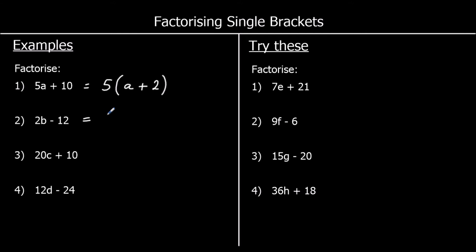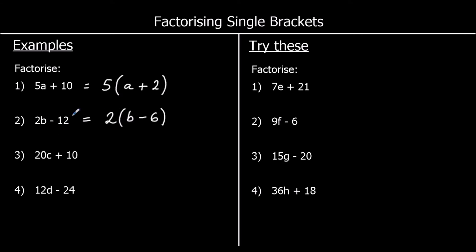For the second one, we've got 2b minus 12. What's the biggest factor of 2b and 12? That's 2 — both 2 and 12 are in the 2 times table. 2 times what would make 2b? 2 times b. And 2 times what makes negative 12? 2 times negative 6. So if we expanded this: 2 times b makes 2b, and 2 times negative 6 makes negative 12.